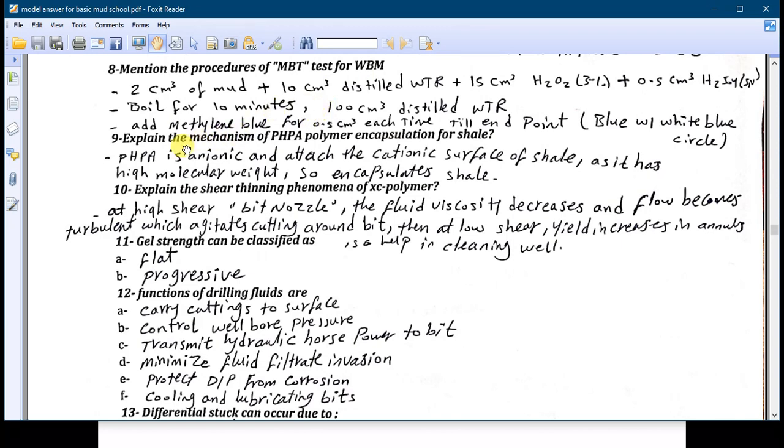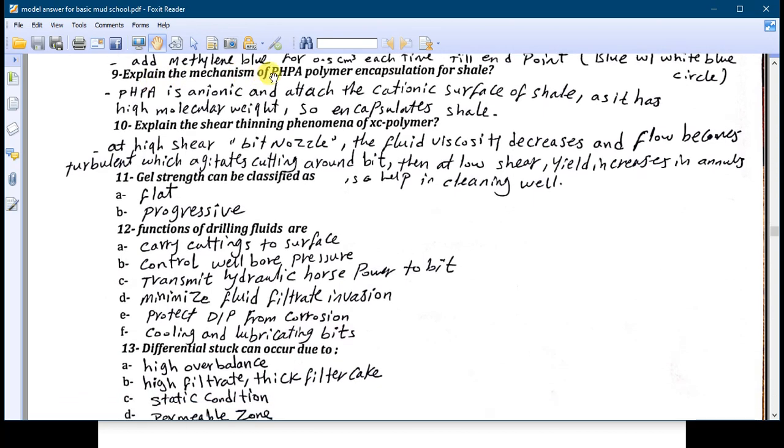Question nine: explain the mechanism of the PHPA polymer encapsulation for the shale. The PHPA is an anionic polymer, or partial hydrolyzed polyacrylamide is an anionic polymer, and it attaches to the cationic surfaces of the shale because it has positive charges like Na+ for example. After they are attaching to it, the PHPA polymer has very high molecular weight but the shale is very small molecular weight, so that it makes an encapsulation for the cutting.